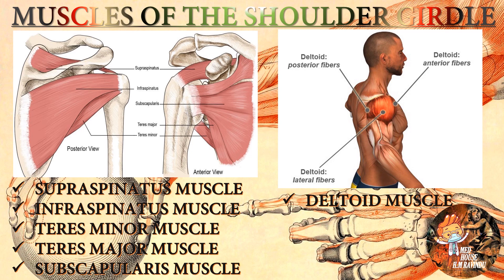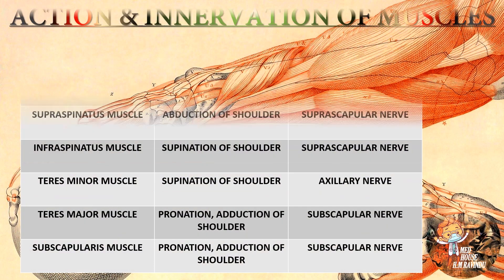Now we are going to talk about muscles of the shoulder girdle. The first muscle is the deltoid muscle, which we can subdivide into three groups: anterior fibers (anterior deltoid), lateral fibers (lateral deltoid), and posterior fibers (posterior deltoid). Then we have supraspinatus, infraspinatus, teres minor, teres major, and finally subscapularis muscles.